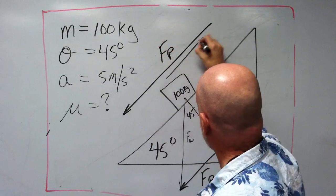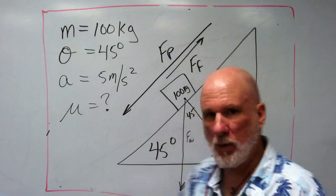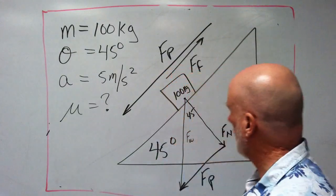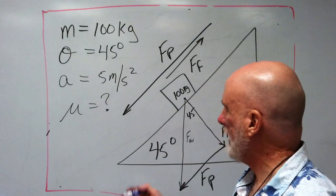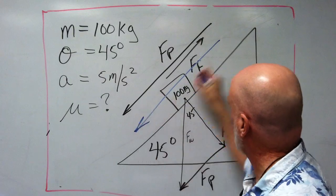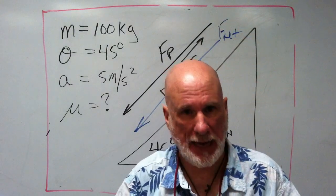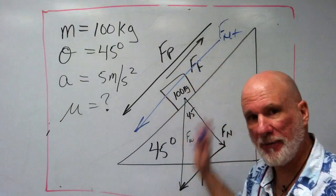So that's the free-body diagram. And we know that that's going to be Fp. We know that that's going to be Ff. And what we want to know is we have to find out what Fnet is. We have to find that Fnet. Take a look at that for a minute.